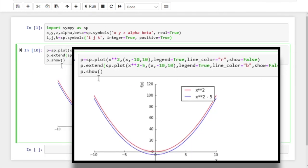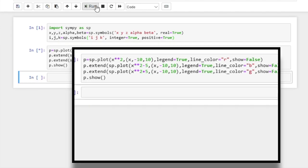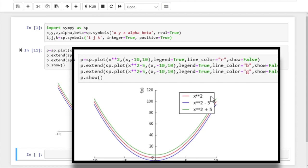And now we can copy the code and then add the third line, which is x squared plus 5. And let's set this color to green. So if we run, so we have the three lines in different colors now. And that's what we wanted.